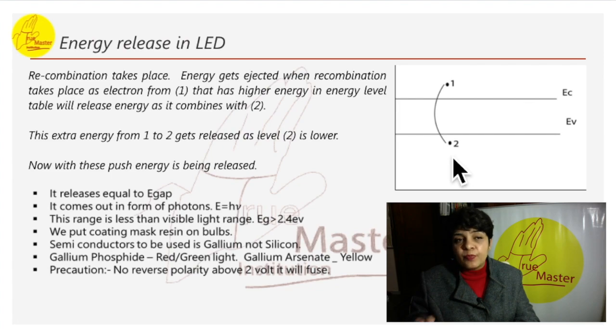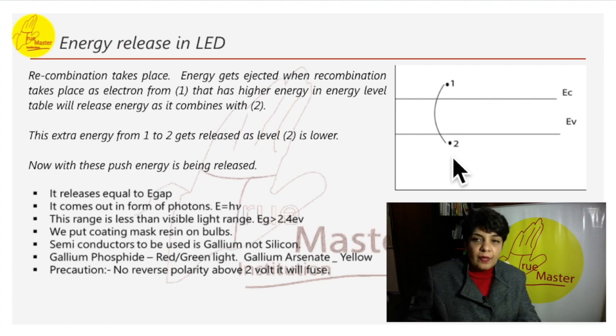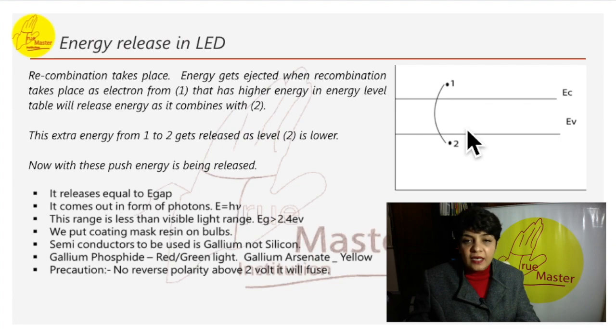It releases energy equal to E gap. So it is equal to this E gap. That is why we are not taking silicon. We are taking gallium arsenate. This energy comes out in form of photons. And how much is that energy? E is equal to H mu. We don't use silicon in this construction as silicon E gap is only 1.1. So the range for this device is less than visible light, 2.4 EV.